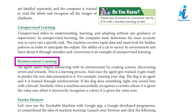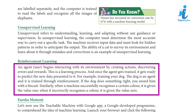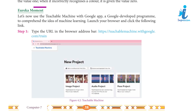Reinforcement Learning: An agent or user begins interacting with its environment by creating actions, discovering errors and rewards. This is a learning process, and once the agent gets trained, it gets ready to predict the new data presented to it. For example, training your dog — the dog is an agent and it is trained through reinforcement. If the dog does something right, you award it with a biscuit. Similarly, when a machine successfully recognizes a certain color, it is given the value 1; when it incorrectly recognizes a color, it is given the value 0.